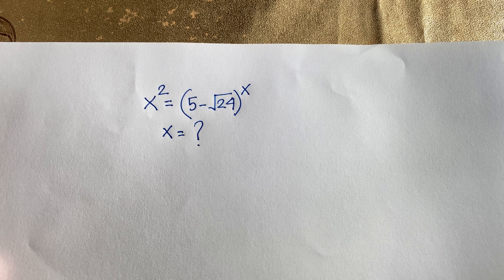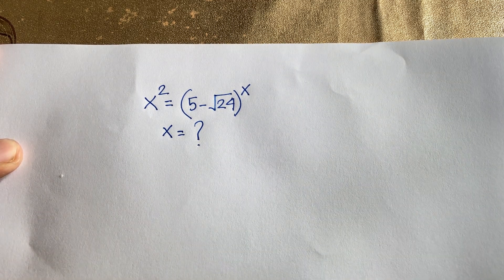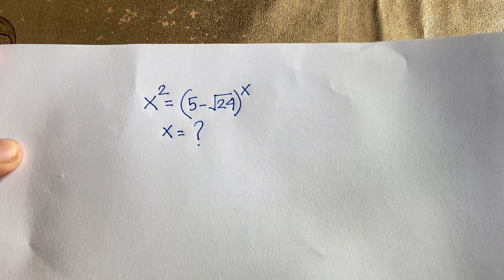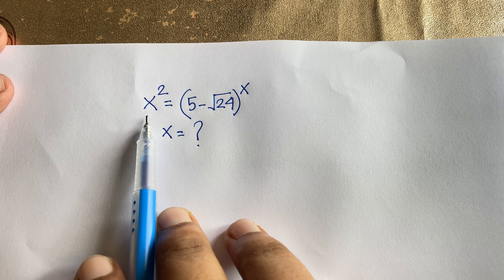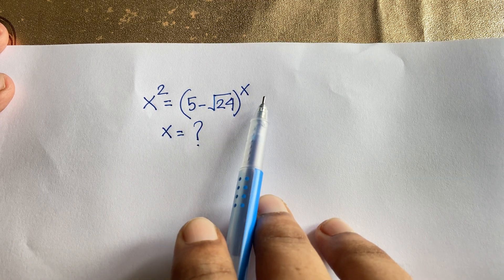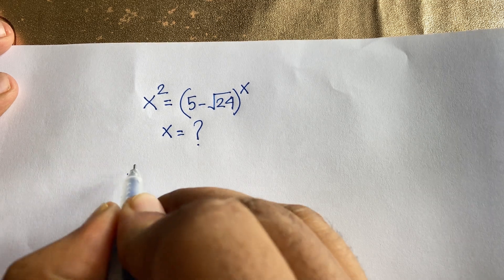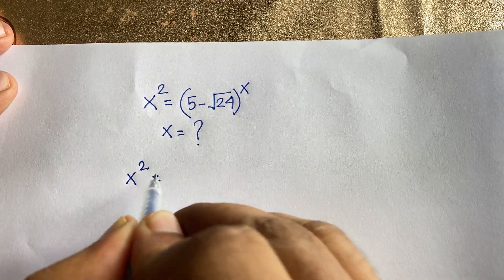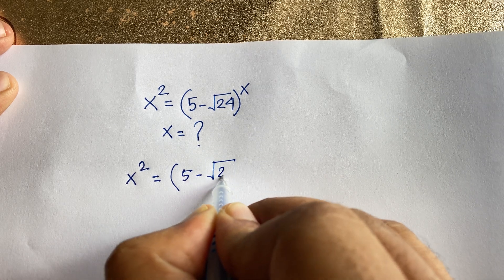Hello everyone. In this video we solve this interesting math question. The question is x squared is equal to 5 minus square root of 24, whole to the power x. We'll find out what is the value of x. Here x is the base on the left side, but x is the exponent on the right side.